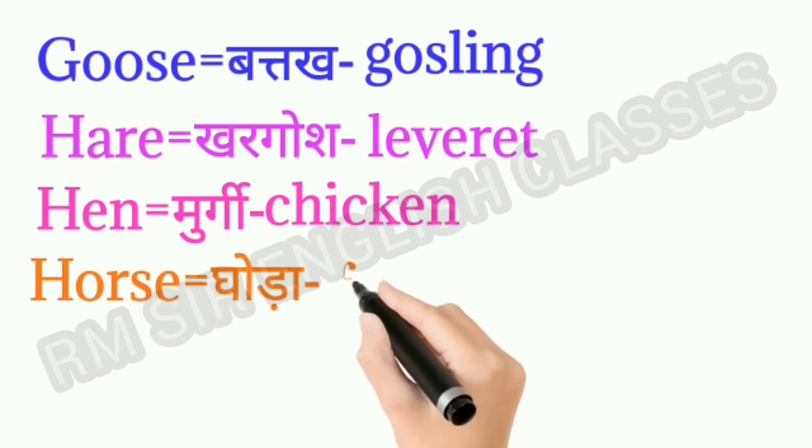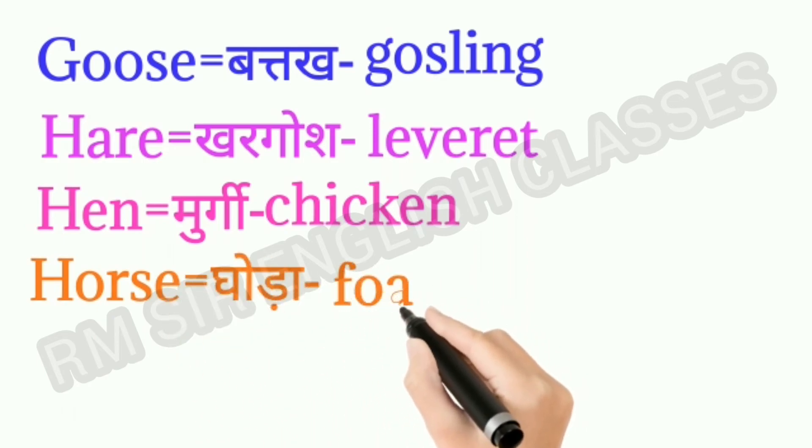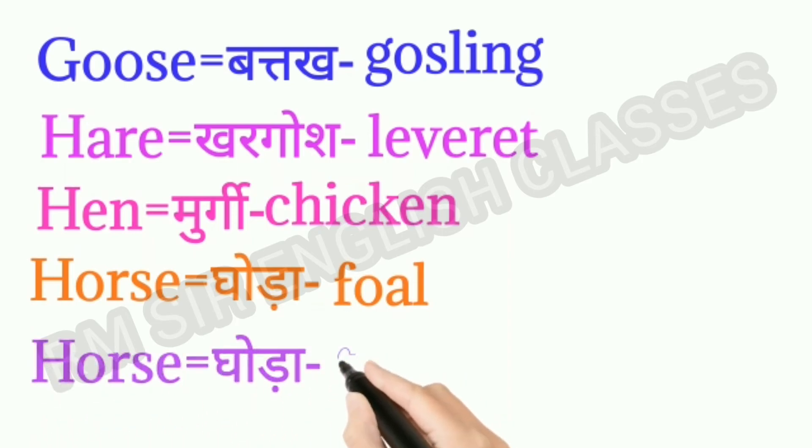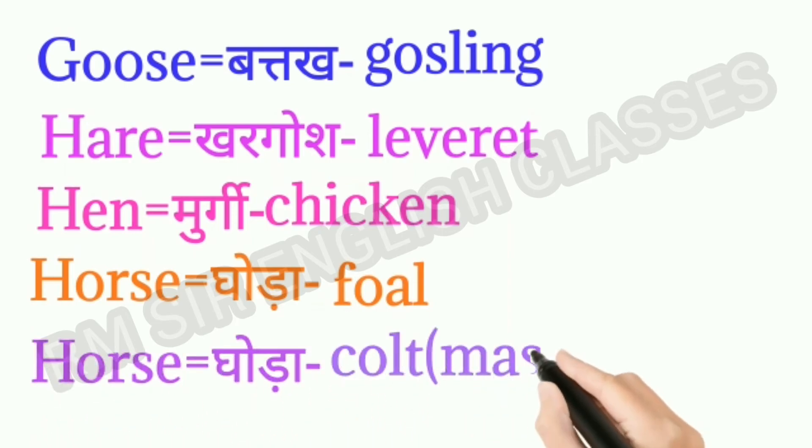Horse means ghora. Baby horse is called foal or colt. Colt is the masculine form.